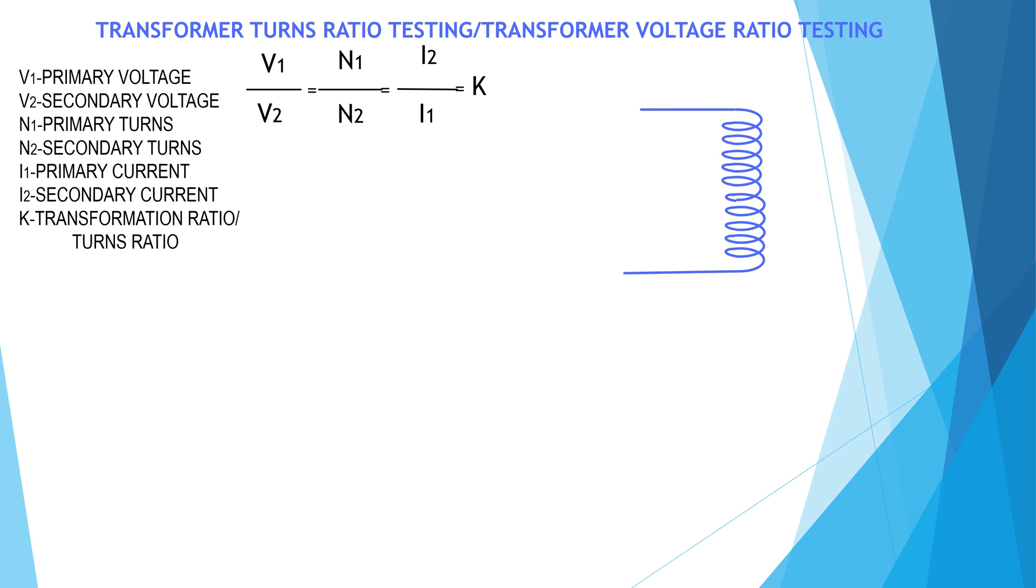Suppose this is a two winding transformer having primary number of turns is 10 and secondary number of turns is 5, then turns ratio is equal to 10 by 5 that is 2. As turns ratio is equal to voltage ratio.